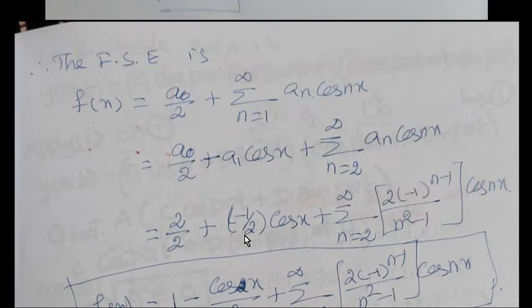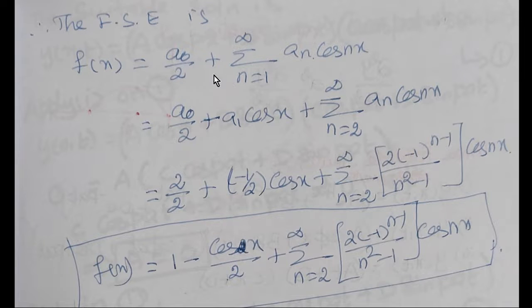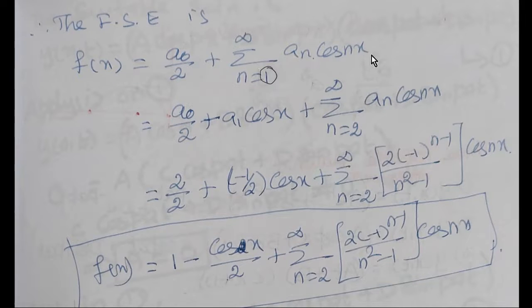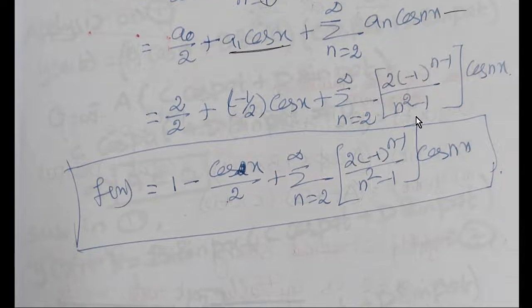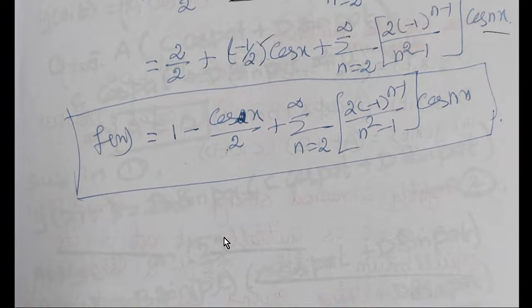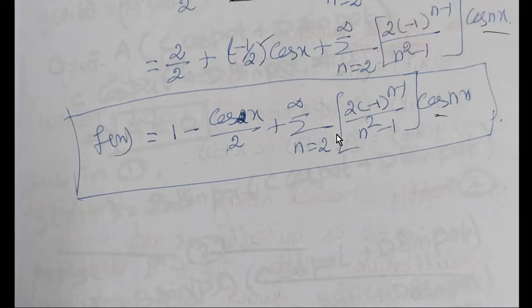Now the complete half range cosine series formula is: f(x) = a₀/2 + a₁·cos(x) + Σ(n=2 to ∞) aₙ·cos(nx). Substituting a₀ = 2, a₁ = −1/2, and aₙ = 2·(−1)^(n−1)/(n²−1) for n ≠ 1: f(x) = 1 − (1/2)·cos(x) + Σ(n=2 to ∞) [2·(−1)^(n−1)/(n²−1)]·cos(nx).